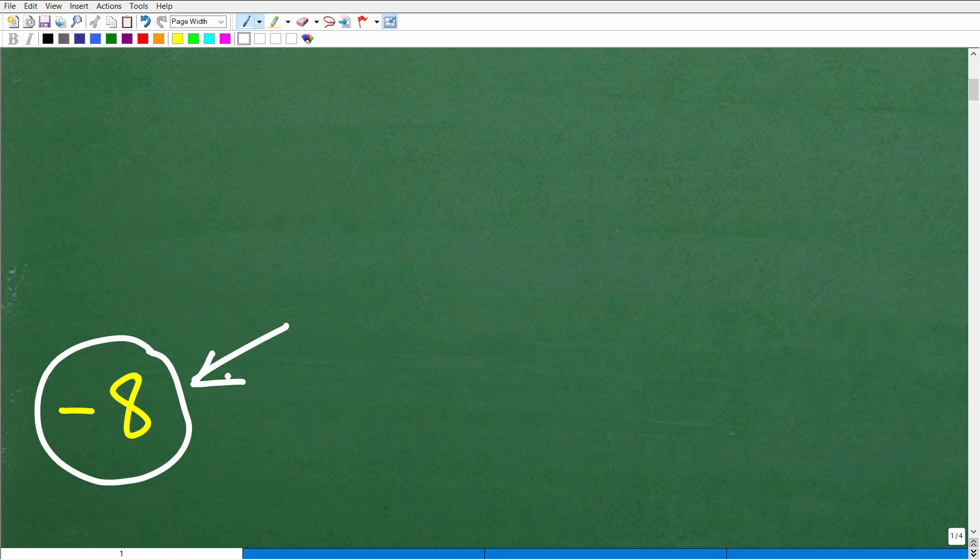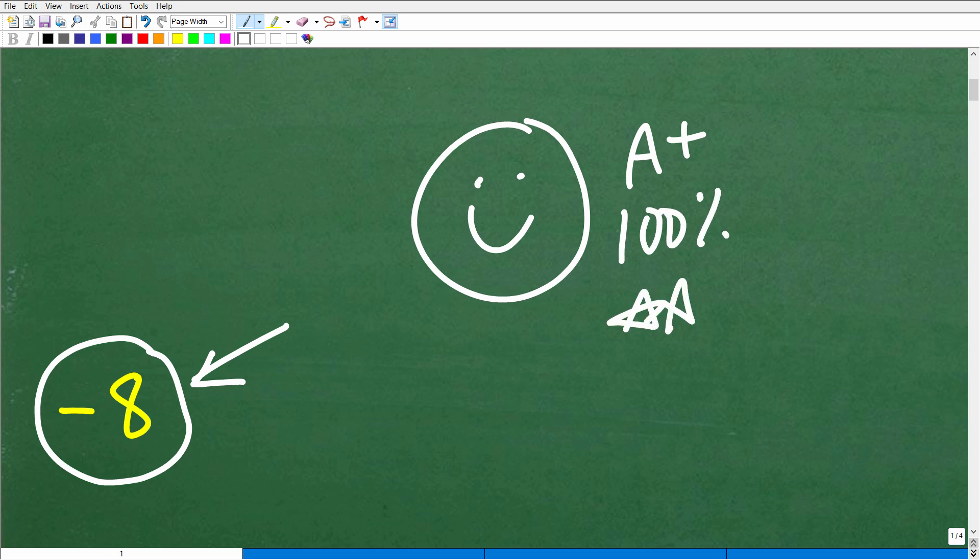Hopefully most of you out there got this right. If you didn't get this right, do not get discouraged. After this quick video, you'll totally understand this. But if you got this right, let's go ahead and celebrate by giving you a nice little happy face, an A+, a 100%, and a few stars. So you can tell your friends and family that indeed you are an expert in translating verbal phrases into mathematical phrases, which is extremely important in mathematics, especially in word problems.